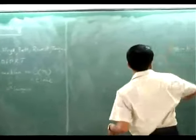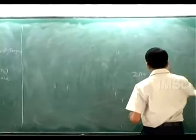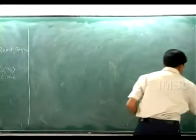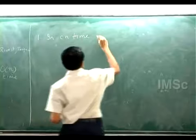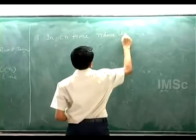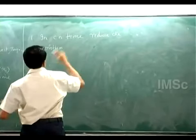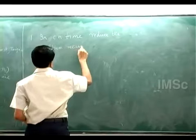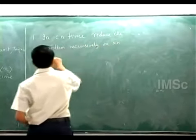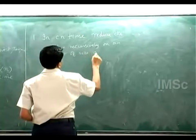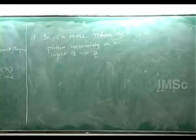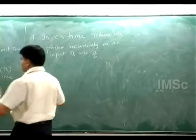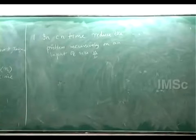So let us write that down: reduce the problem recursively on an input of size n/b — some fraction. If you manage to do that, we fall into this recurrence and you have a linear time algorithm. This was something available to them at that time — they had seen these recurrences and their solutions.